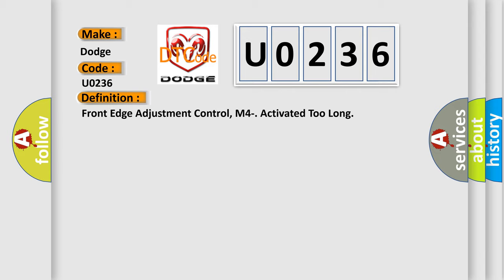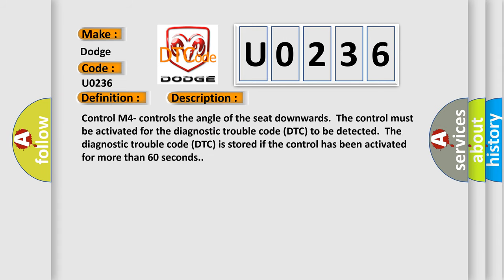And now this is a short description of this DTC code. Control M4 controls the angle of the seat downwards. The control must be activated for the diagnostic trouble code DTC to be detected. The diagnostic trouble code DTC is stored if the control has been activated for more than 60 seconds.